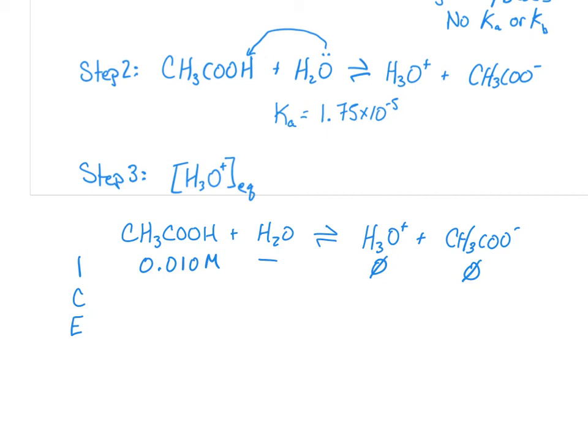And so since I have no products, I already know the direction that my reaction is going to shift. I'm going to lose reactants. And I'm going to gain products. And so my equilibrium is 0.01 minus X, X, and X.